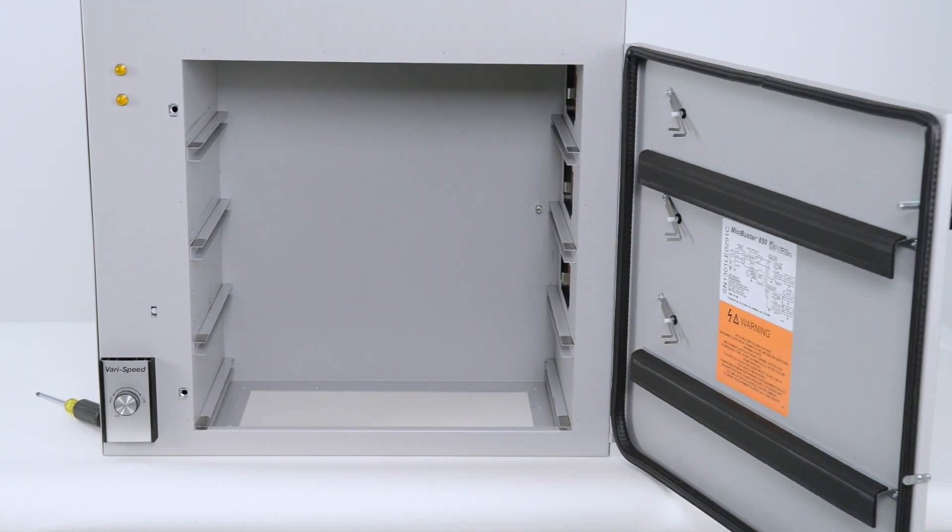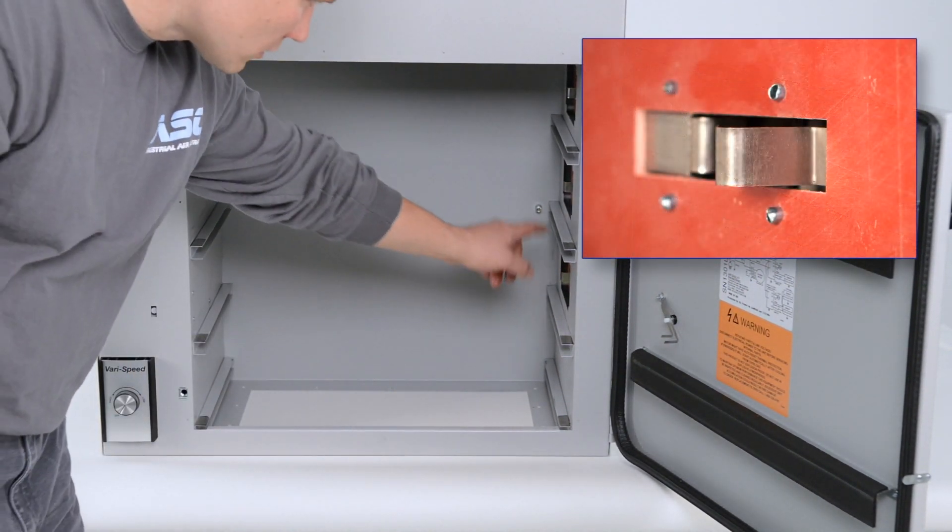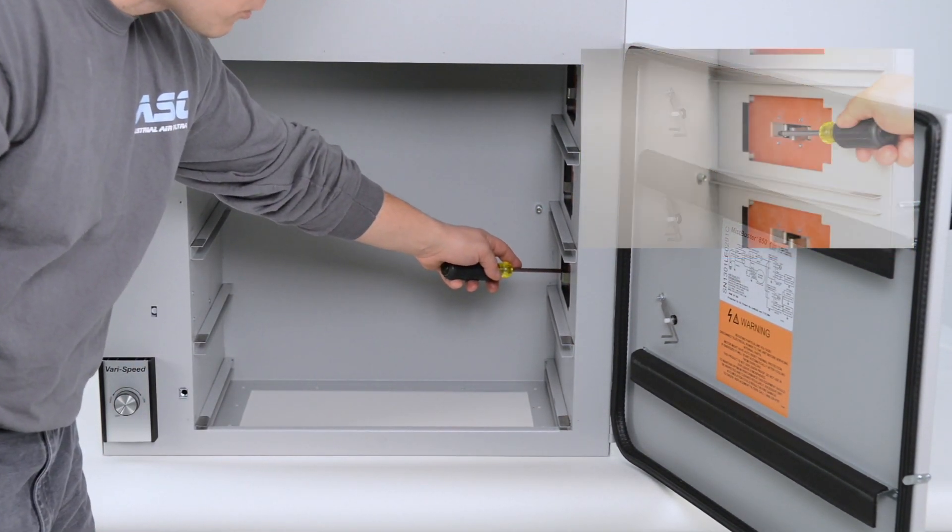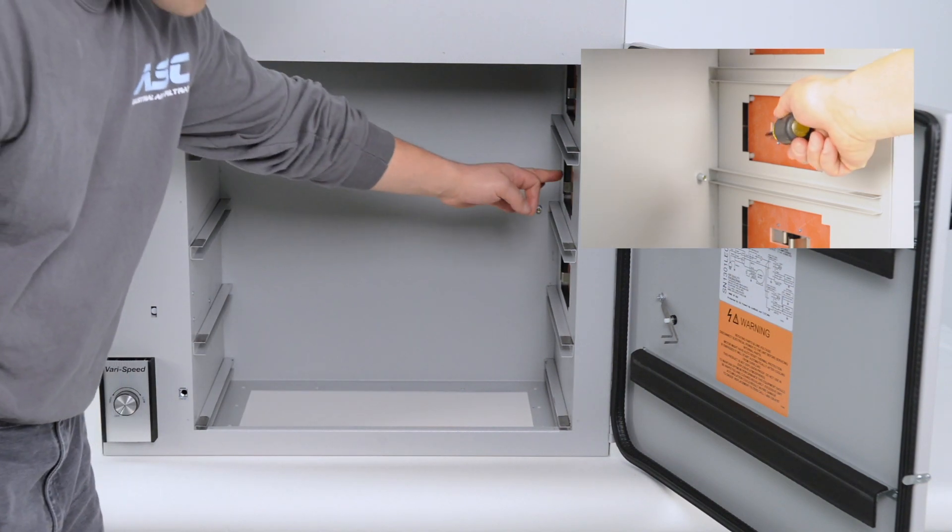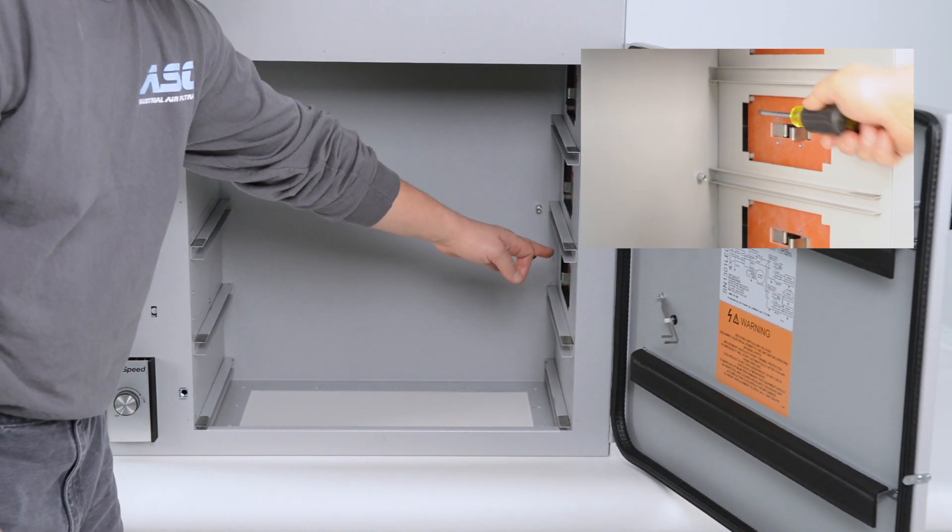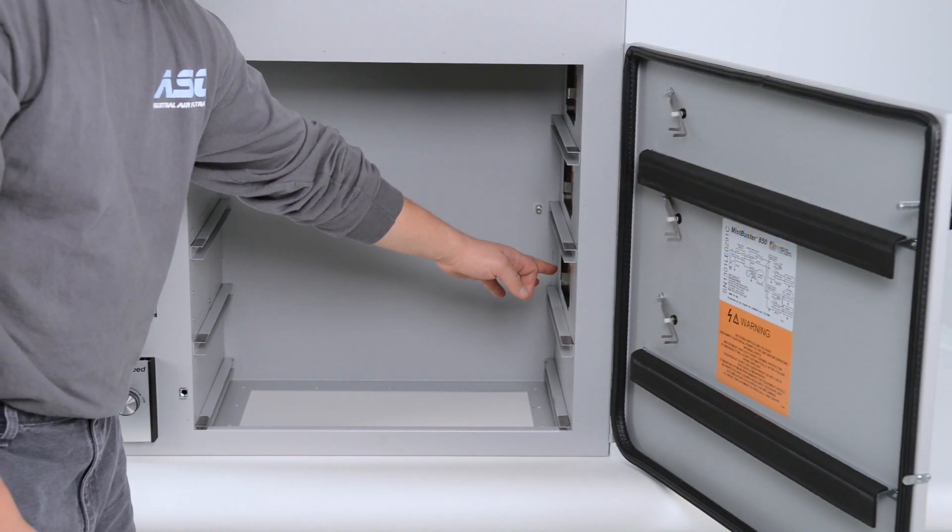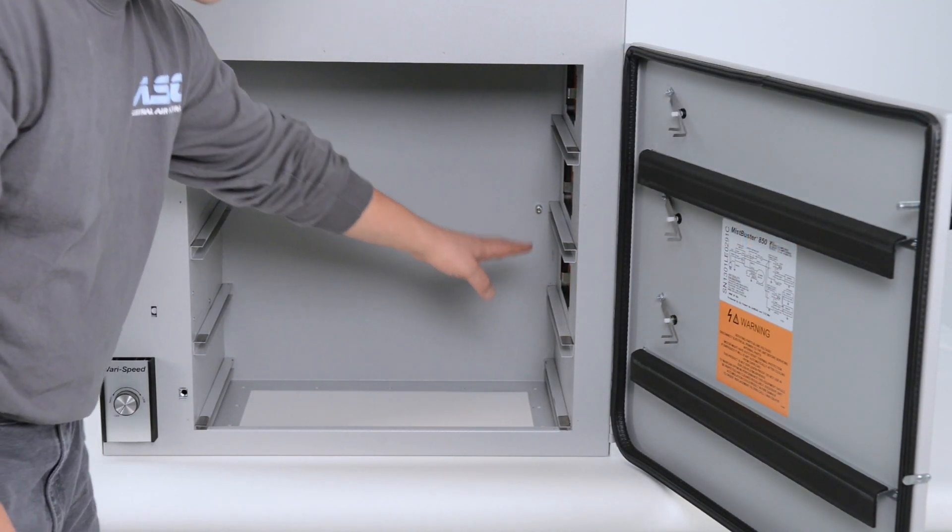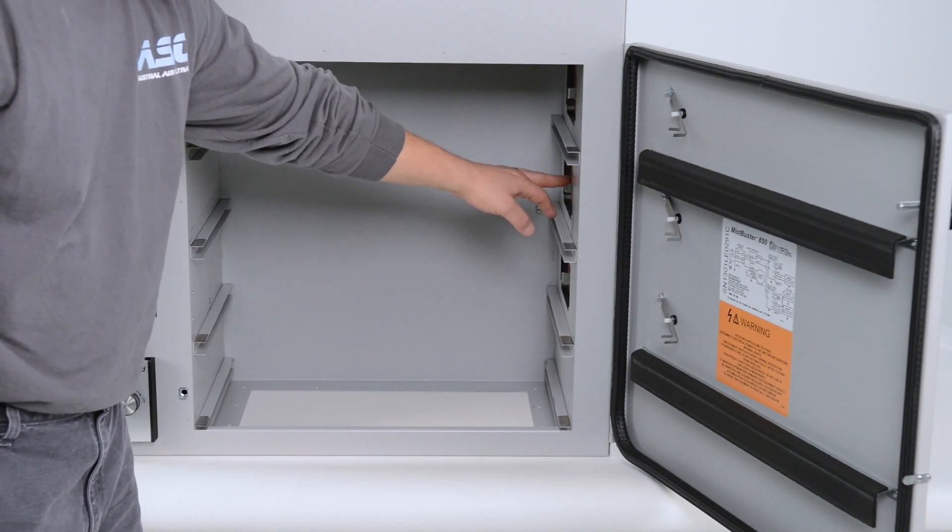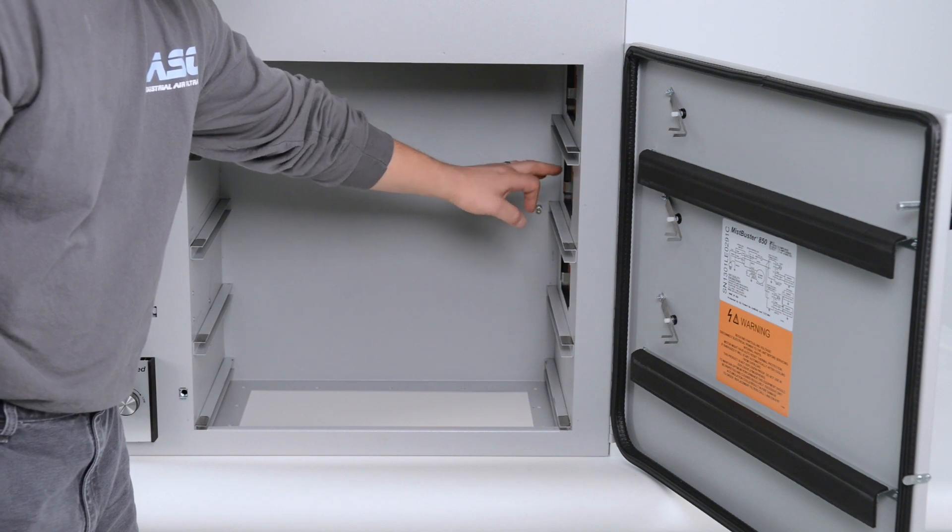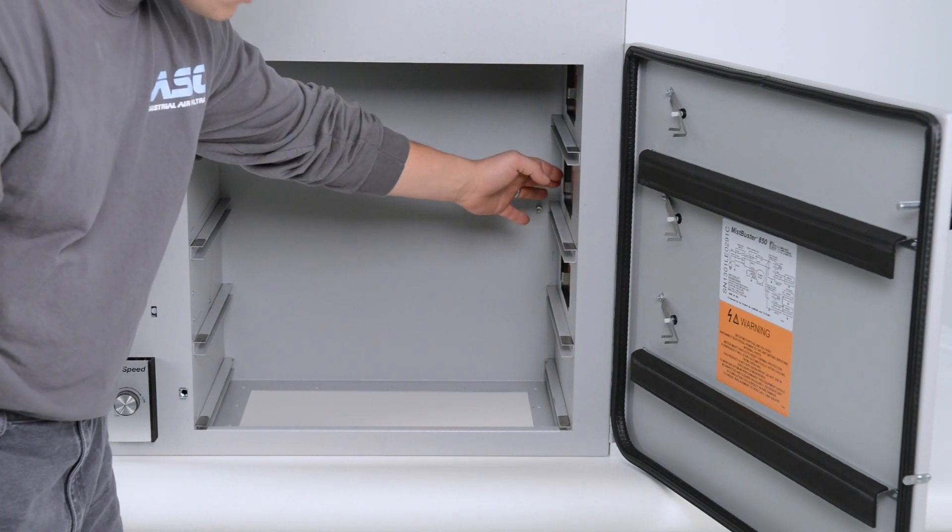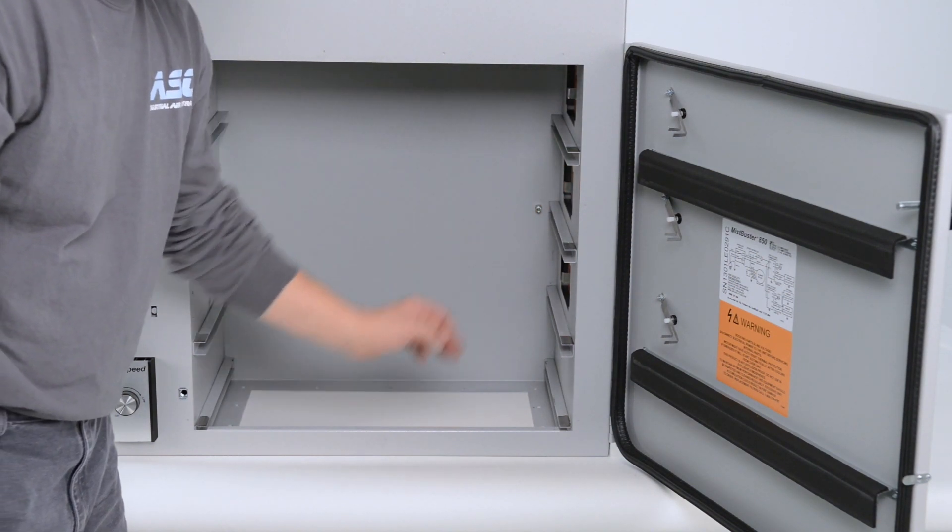You then want to check the connection points inside the unit, ensuring that they are clean and free of any grease or oil. You can use simple green or a scrub pad to clean off any excess grease. If you don't, you might have arcing which would cause the unit to malfunction. So you want to make sure that these contact points are clean and free of grease.